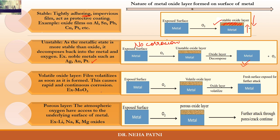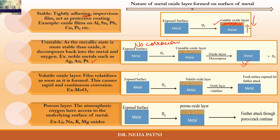The third type is volatile. As the name says, it volatilizes away into the atmosphere, so every time a fresh surface is available for attack. Oxygen may react again, a new metal oxide layer forms, and that scale again volatilizes away, leaving very little metal. Another layer forms and also volatilizes away. So if this kind of corrosion takes place, it is rapid and continuous, meaning the entire metal gets corroded — full corrosion takes place.